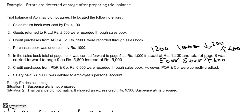Sales account will show a credit balance. Since sales is overcast by Rs. 400, on the debit side of the sales account we write: 'To 2 errors in balance carry forward — net impact Rs. 400,' which corrects the sales balance.